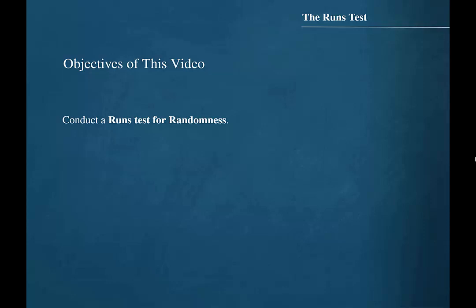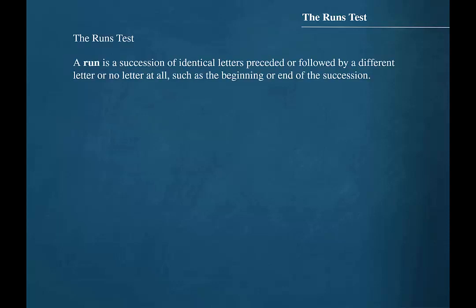The objective for this video is to learn how to conduct a runs test for randomness. A run is a succession of identical letters preceded or followed by a different letter or no letter at all, such as the beginning or end of the succession.